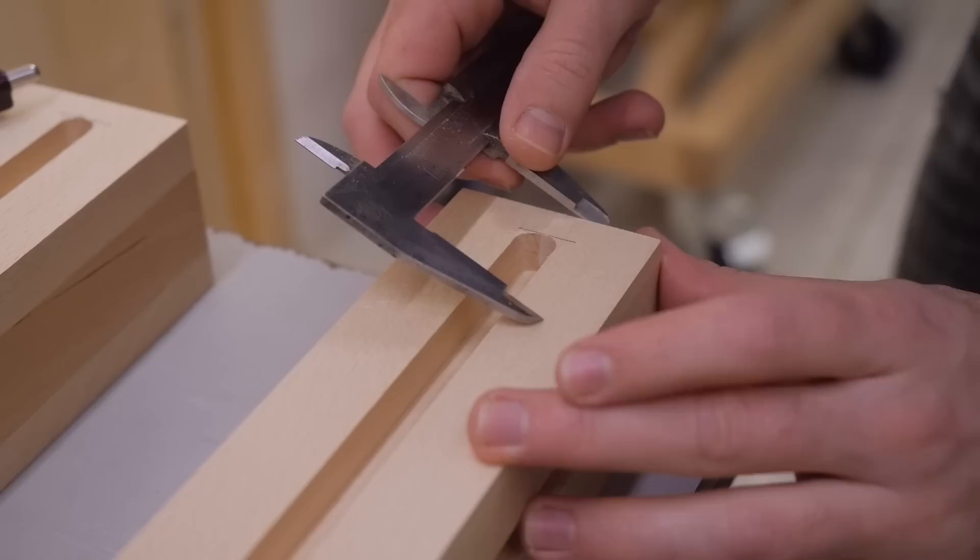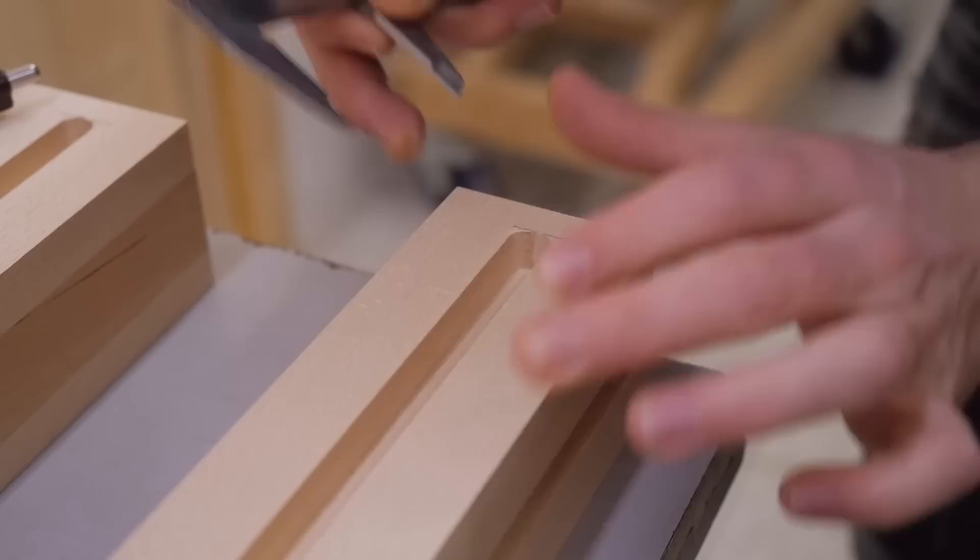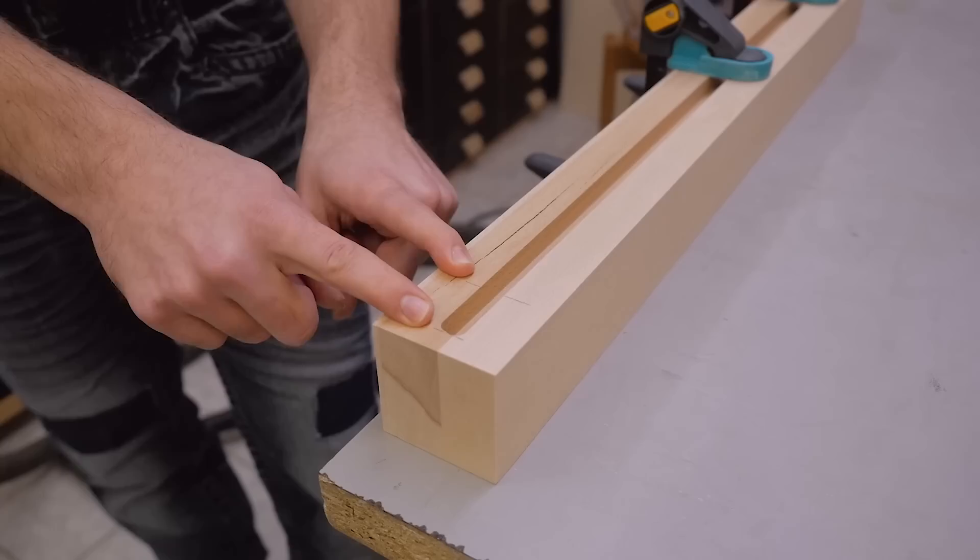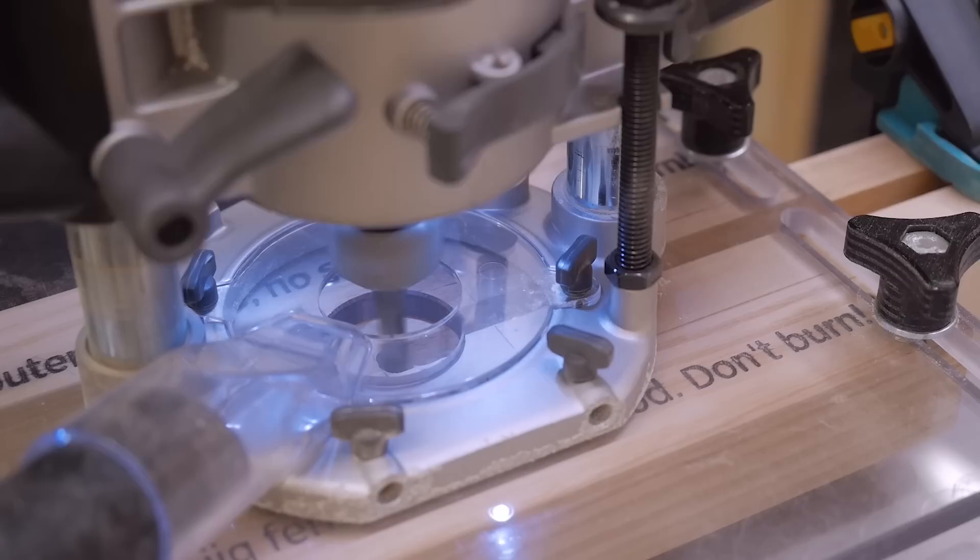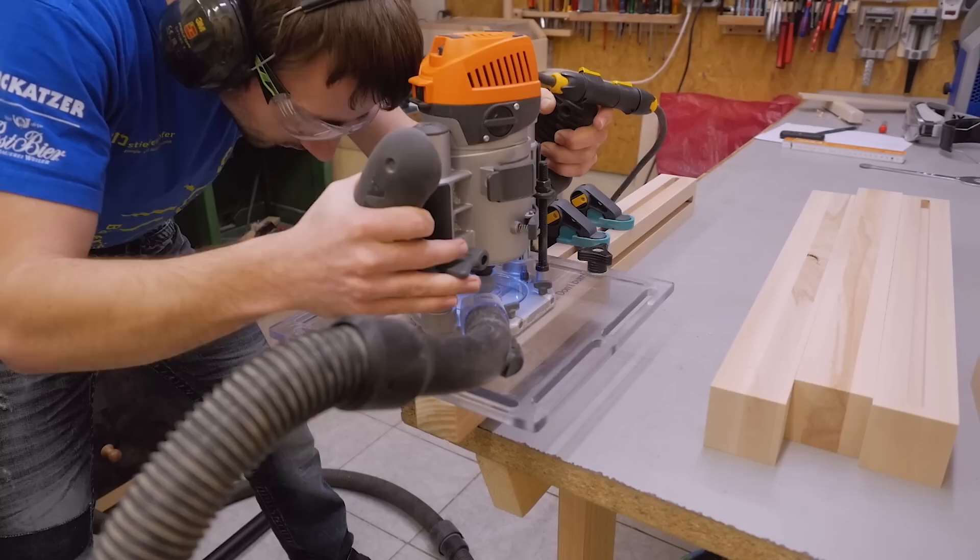Next come the mortises on all ends where these pieces will join with the tenon. Therefore I first make a mark where it ends and make it more visible. Making the mortises now is extremely simple because I designed them to be the same size as the already existing slot.